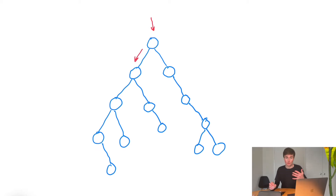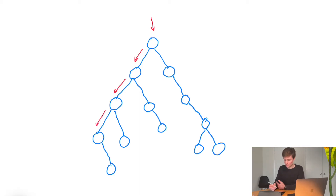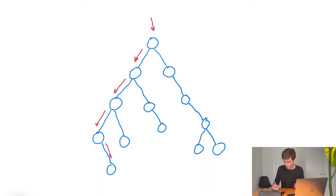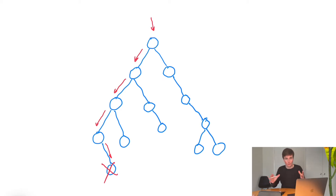We're going to use recursion. We'll call exactly the same function to check if this node has a previous node, step down, and use recursion again. This continues until we reach a node that does not have a previous node. Then we check if it has a next node and use recursion again. When a node has neither a previous nor a next node, we can free it. That recursive layer ends and we come back out, and since we've checked previous and next, we are free to free that node too.